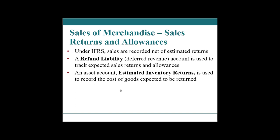Sales of merchandise — sale returns and allowances. When selling, if we are talking about IFRS, International Financial Reporting Standards, the sales would be recognized net of estimated returns. So if we sell a hundred, but historically we always receive $3 out of every hundred as a return, then we can only recognize $97 as sales.